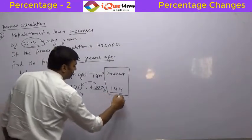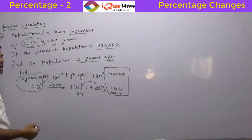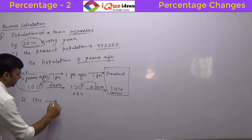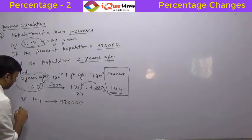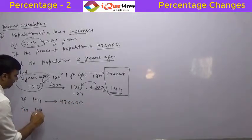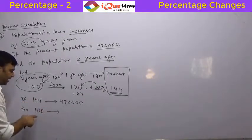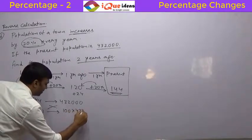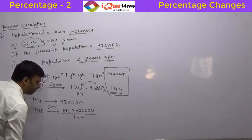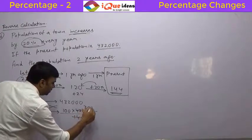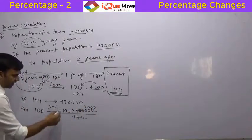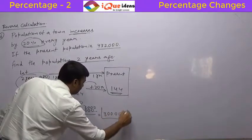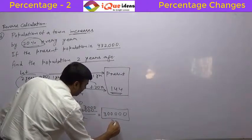This present population of 144 corresponds to 4,32,000. We simply apply the unitary method: if 144 is equivalent to 4,32,000, then 100 will be 100 × 4,32,000 ÷ 144. Since 144 divides into 432 three times, we get 100 × 3 = 3,00,000. So the population 2 years ago was 3,00,000.